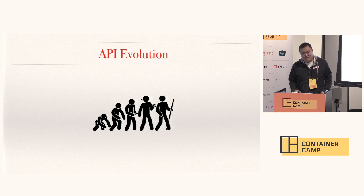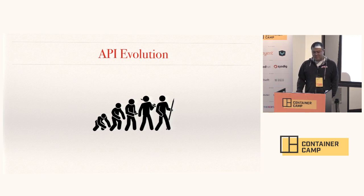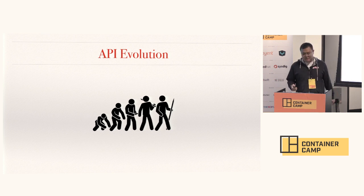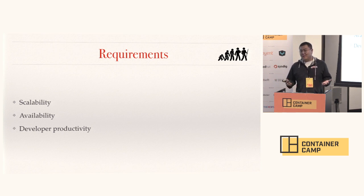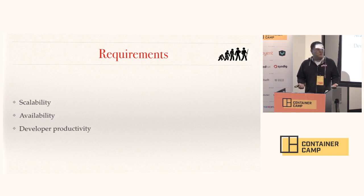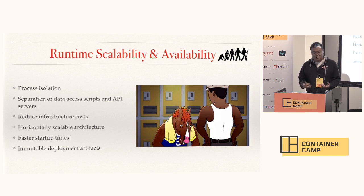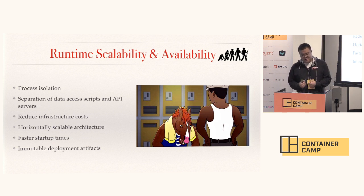So let's talk about what we're really here for today: the next evolution of our API platform. As we get more devices, faster velocity of change, more original series, and more customers, what are the goals for our next-generation API platform? In terms of requirements, the three biggest things are: scalability — we're fast approaching our scaling limits; availability — we want Netflix to be available all the time; and developer productivity — we want developers to very easily develop new APIs for their clients. For scalability and availability, what really comes to mind is process isolation — we never want one script to take down all of Netflix again — and the ability to scale everything horizontally and individually.